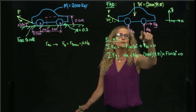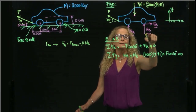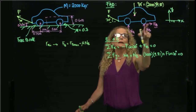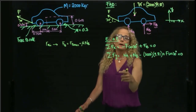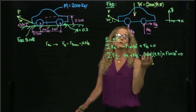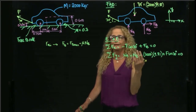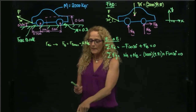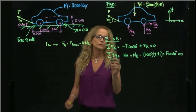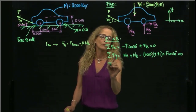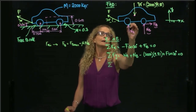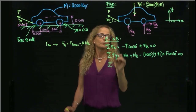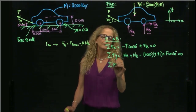Now these two are related, so I have three unknowns and three equations of equilibrium. My next equation is taking moments with respect to any point — I will take moments with respect to point A.